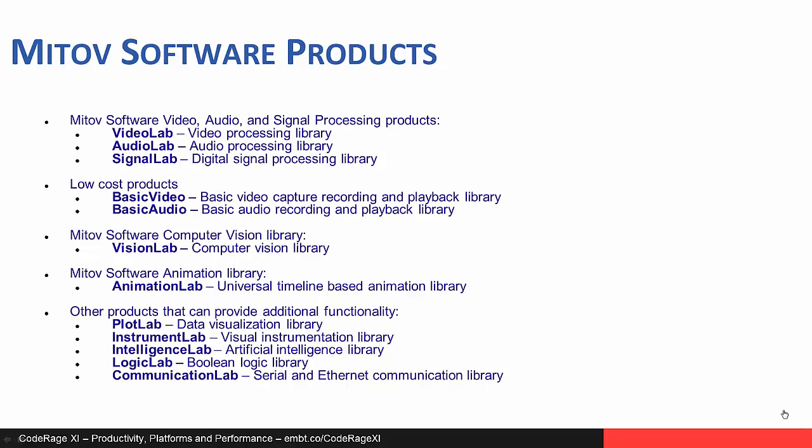When working with video, audio, and signal processing, the following libraries can be used. VideoLab is a video processing library, AudioLab an audio processing library, and SignalLab a digital signal processing library. In addition, Basic Video and Basic Audio are available, which contain subsets of components from VideoLab and AudioLab, and can be used when only basic playback and recording functionality is needed.